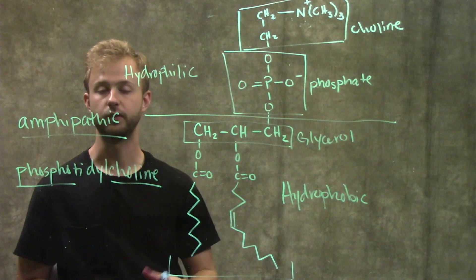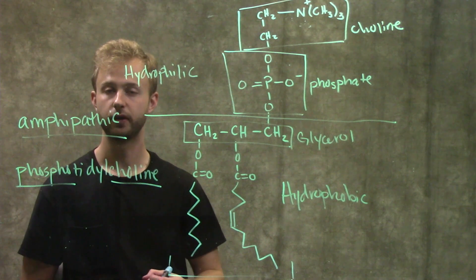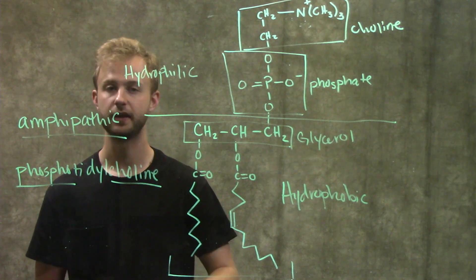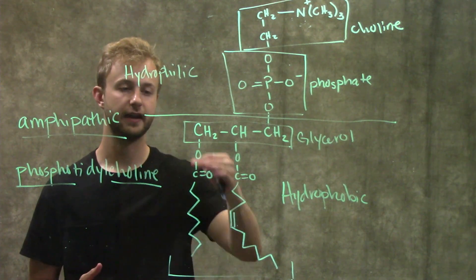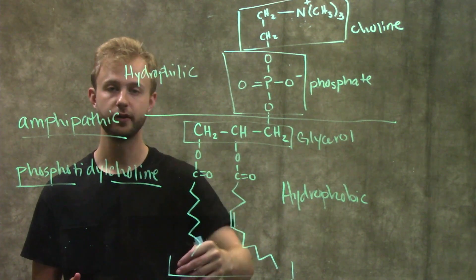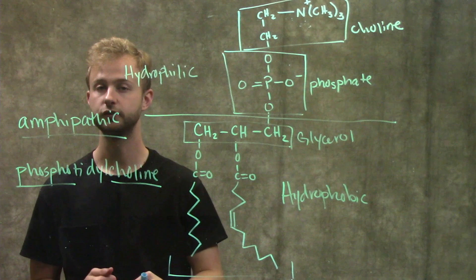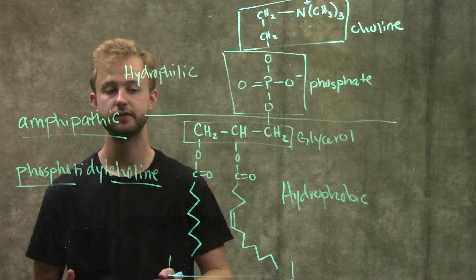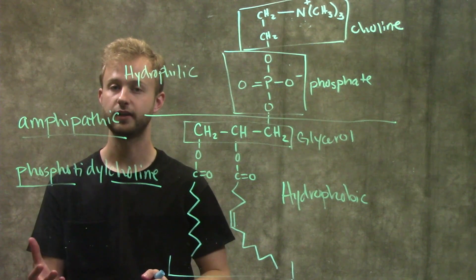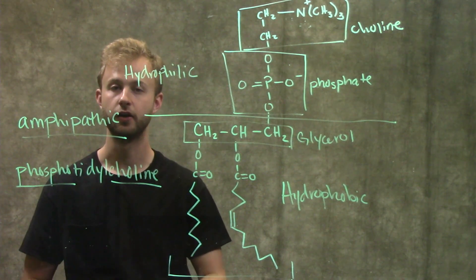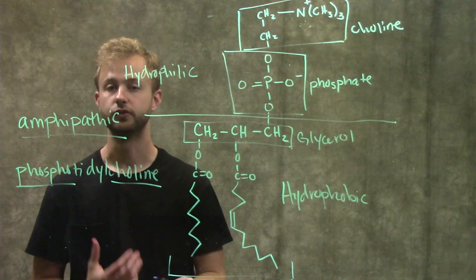So this is going to be really important when we look at membrane structure and membrane formation because phospholipids make up the majority of our membranes and they're able to do this because they have this hydrophobic region that can interact with other hydrophobic regions on neighboring phospholipids as well as this hydrophilic region which can point towards the outside of the cell or the cytoplasm of the cell and interact with water in those areas.